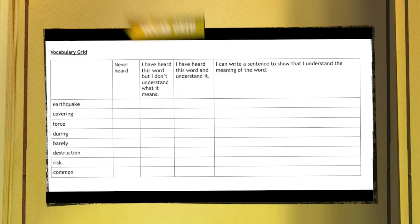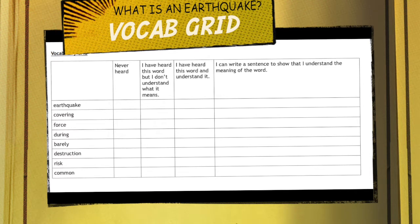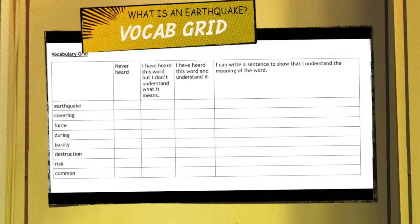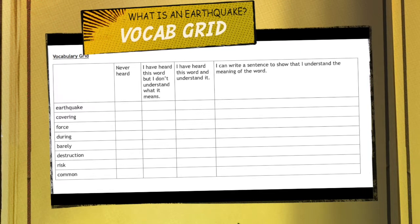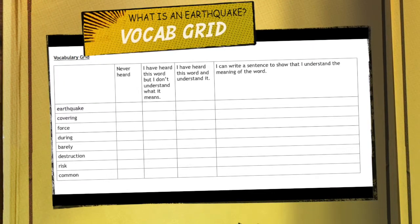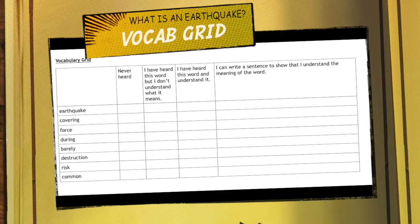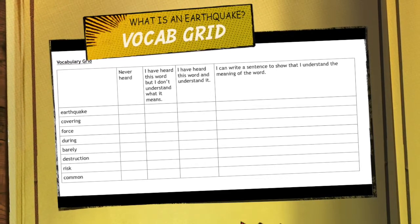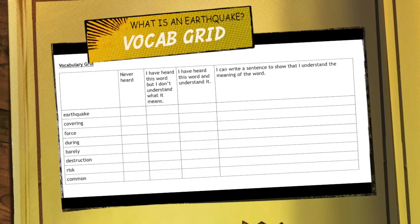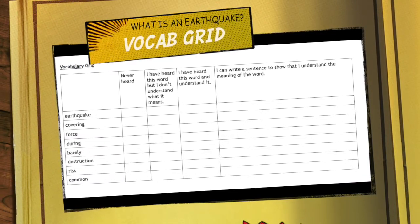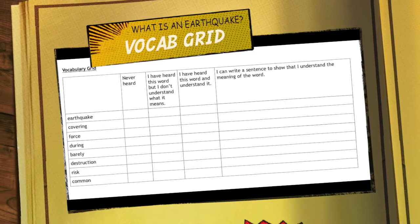Here's your vocab grid that you need to complete today. If you don't have a printer, you can draw this in your books. For each word, you need to tick if you've never heard it, if you've heard this word before but don't understand what it means, or if you've heard this word and understand it. If you tick that you've understood it, then in the very last column, you need to write a sentence to show you understand the meaning of the word. I'm going to read you each of the words now on this vocab grid.